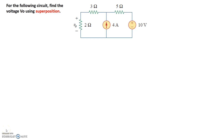In this particular circuit, we're asked to find the voltage across the 2 ohm resistor, right here, V0, using the superposition principle.